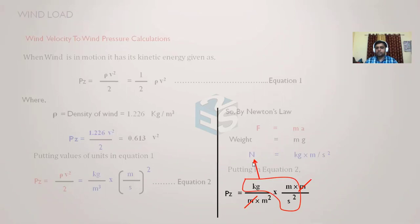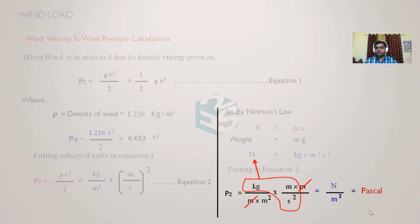Newton per meter squared represents Pascal, which is the unit of pressure. That's how we convert wind velocity V into wind pressure: a given wind velocity generates a corresponding pressure on a surface, calculated as Pz = 0.613V². This figure can vary slightly depending on the atmospheric conditions specified in various wind codes, but by and large this is how wind pressure is calculated.